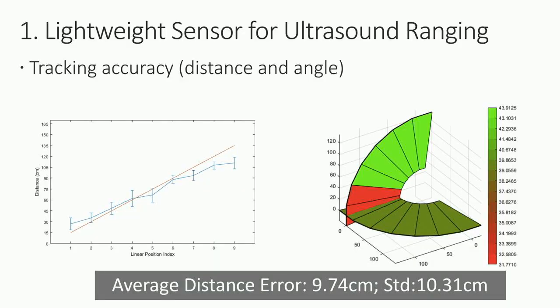The result of the ultrasound tracking accuracy: we evaluated performance with respect to distance and angle. The average distance error is around 9 centimeters and the standard deviation is around 10 centimeters. This includes the clock synchronization error and the ultrasound measurement error — this is the result of the entire sensing system.